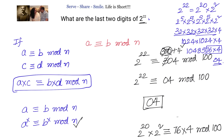Whenever we have problems like this, we can use congruence modulo to easily find out either the last one digit, two digits, or three digits. Last one digit: use the remainder when divided by 10. Last two digits: use the remainder when divided by 100. Last three digits: use the remainder when divided by 1000.